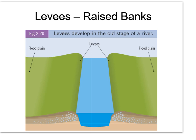Levees are raised banks that form in the old stage of the river. They occur during flooding when the river rises and floods onto the floodplain. The heavier material is deposited closest to the river bank. After the flood retreats, these raised banks — called levees — are left behind. They actually prevent future flooding because the water must rise to a higher level. You can also get man-made levees built in flood-prone areas to raise the banks.